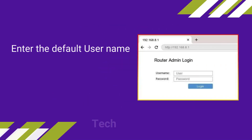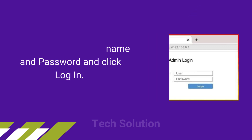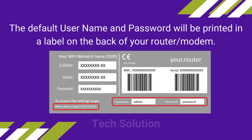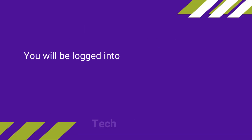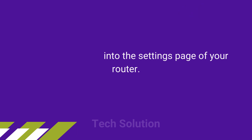Enter the default username and password and click Log In. The default username and password will be printed on a label on the back of your modem. You will then be logged into the settings page of your router.